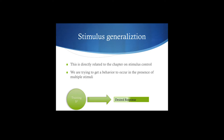With stimulus generalization, we're going to train you on one discriminative stimulus that produces a desired response — let's say being polite. But we also want you to be polite in multiple settings. We don't just want you to be polite at home; we want you to be polite in public, with other family members, at extended family's houses. So we may have to actually go out and train in those new settings, or figure out ways to program reinforcement in those environments. It's not naturally automatic for behavior learned in one setting to occur in new environments. Behavior is very sensitive to context.